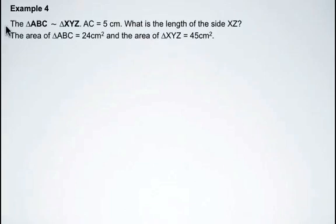In this example we're given that triangle ABC is similar to triangle XYZ. We're also given that side AC is 5 centimeters, and we're asked to find the length of side XZ.